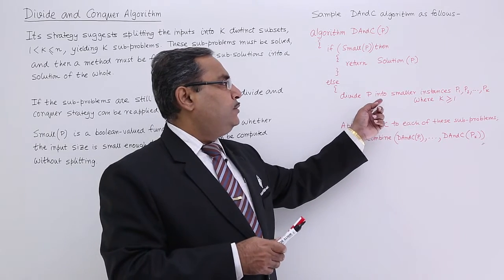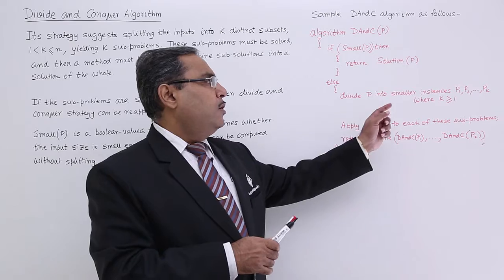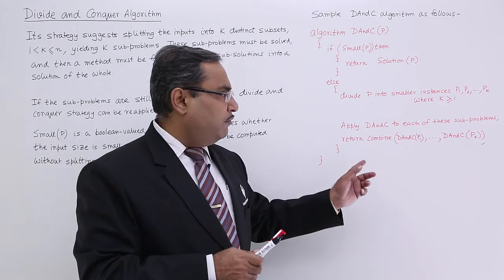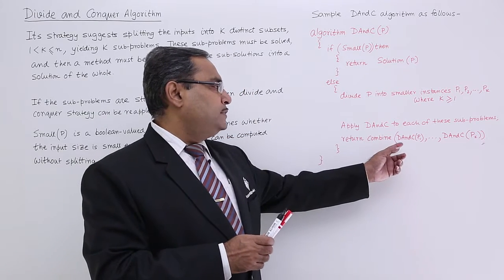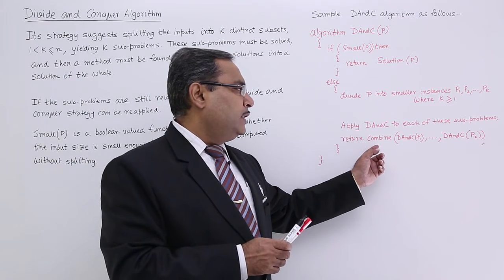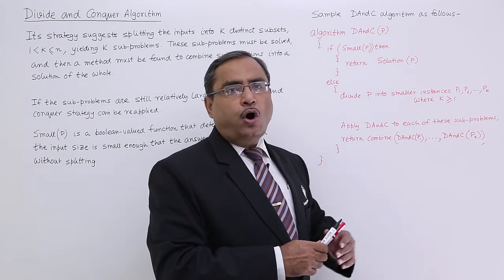Else, divide p into smaller instances p1, p2, p3 dot dot dot pk, where k is greater than equal to 1 obviously. And apply divide and conquer to each of these subproblems and then combined divide and conquer of p1 dot dot dot divide and conquer algorithm on pk.